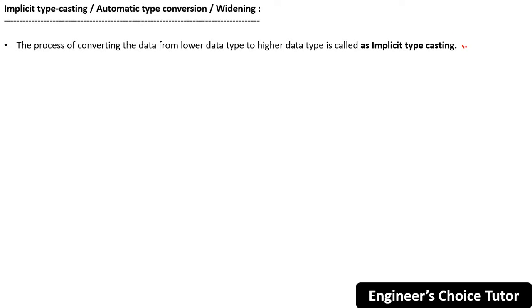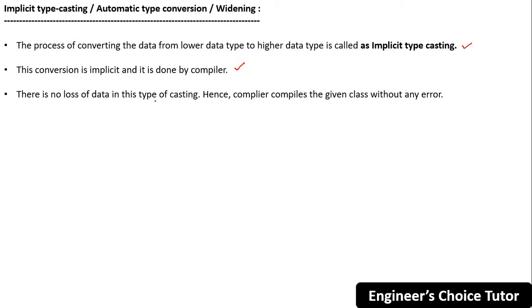What is implicit typecasting, or automatic type conversion, or widening? The process of converting data from a lower data type to a higher data type is called implicit typecasting. This conversion is done by the compiler — the compiler is responsible to perform implicit typecasting — and there is no loss of data in this type of casting.